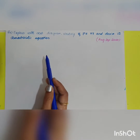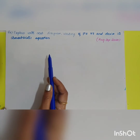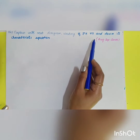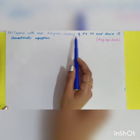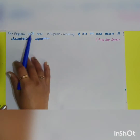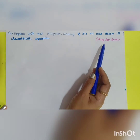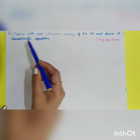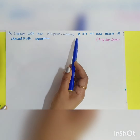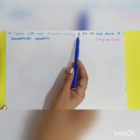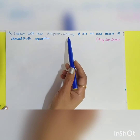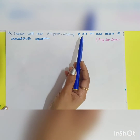The next question is: explain with a neat diagram the working of a JK flip-flop and derive its characteristic equation. This is a question from August/September 2020. Given: you have to find out the working and draw the diagram of a JK flip-flop.